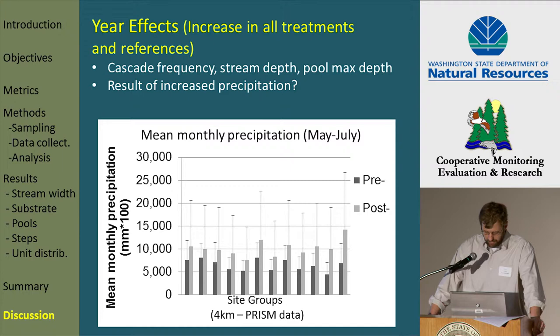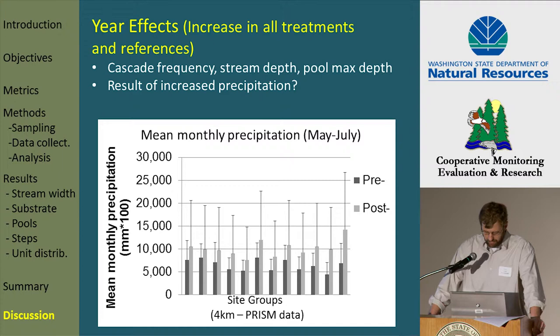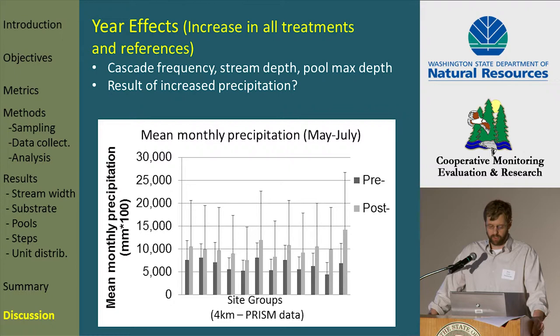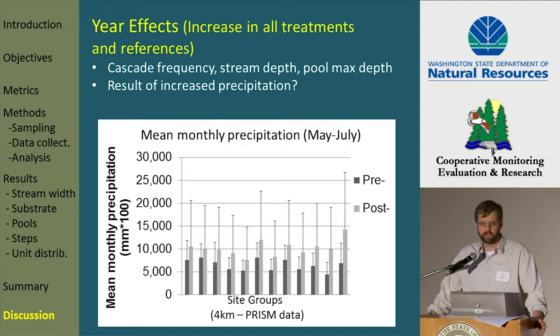This graph groups together all the sites that were within four kilometers of each other, which is the resolution of the PRISM climate data we drew this from. You can see all across the board there was an increase in precipitation. It's not hard to imagine how those particular metrics might have been influenced by an increase in precipitation, and it's really good to keep that in mind for all of our results here.